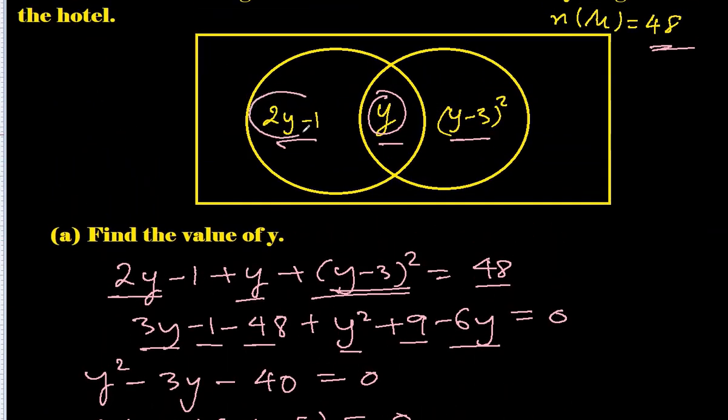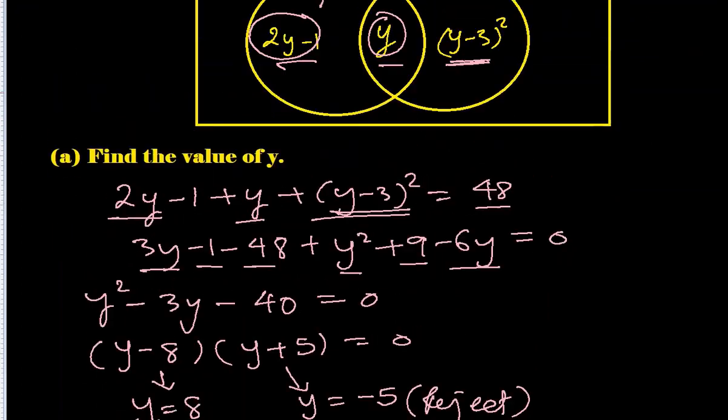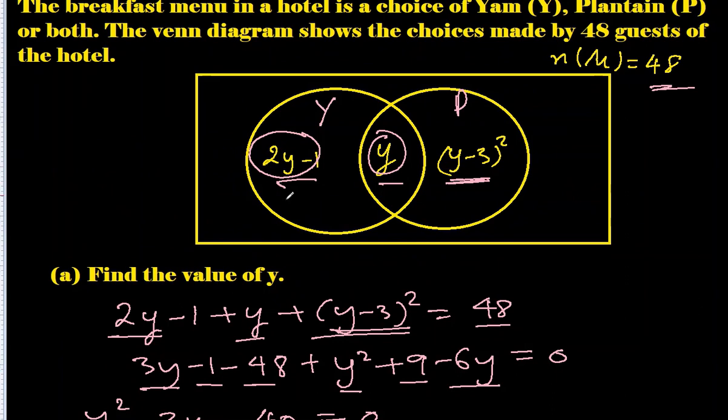How many of them are having Yam or Plantain but not both? So let's count them. This is Yam but not Plantain, this is Plantain but not Yam. So we can put the value of y we got, which is 8.